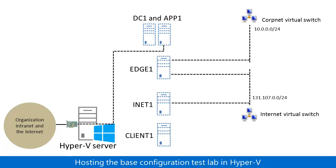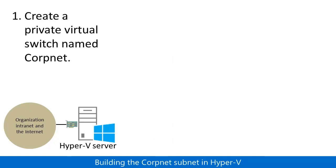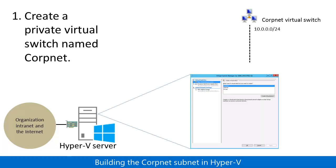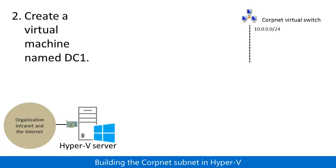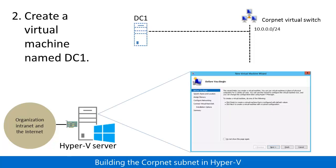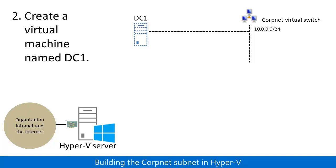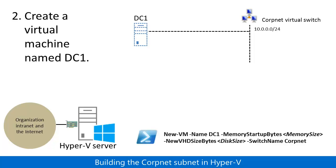Now let's build it out, starting with the CorpNet subnet. In step one, you create a private virtual switch named CorpNet. You can do this in the Hyper-V Manager snap-in with the Virtual Switch Manager, or with the New-VMSwitch Windows PowerShell cmdlet. In step two, you create a new virtual machine named DC1 that is connected to the CorpNet virtual switch. You can do this in the Hyper-V Manager snap-in with the New Virtual Machine Wizard, or with the New-VM Windows PowerShell cmdlet.